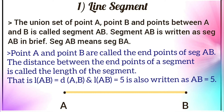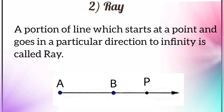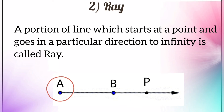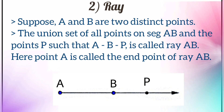Next is ray. A ray is a portion of a line which starts at a point and goes in a particular direction to infinity. You can see in the diagram of ray AB: here A is an endpoint, but after B there is an arrow showing it extends to infinity. A and B are two distinct points; the union of all points on seg AB and point P such that A–B–P is called ray AB.